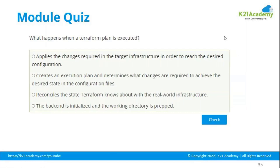Another question: Terraform plan is basically used to compare your desired state and current state, kind of a dry run. So what happens when you run a Terraform plan? Option A: applies the changes. Option B: creates an execution plan and determines what changes are required to achieve your desired state. Option A is incorrect — Terraform plan will not apply your changes. Terraform plan compares your current and desired state and proposes the changes. Terraform apply will apply your changes. So the correct option is B.